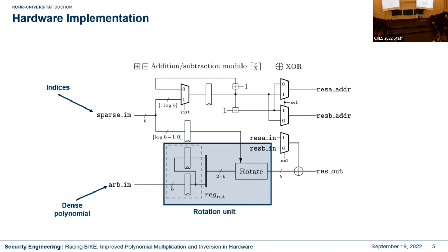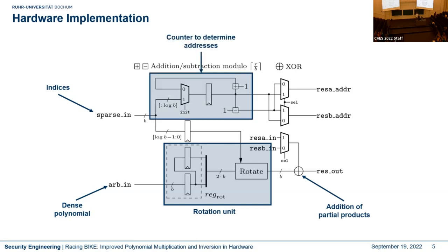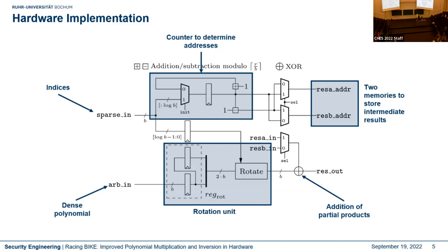After rotation we extract b bits and accumulate them to the current intermediate result, then write them back to memory. The upper part is the rotation unit performing rotation on the word level, basically a counter initialized with the upper bits of the sparse index. We use two memories so we can read the current intermediate result and write back the new one in the same clock cycle.